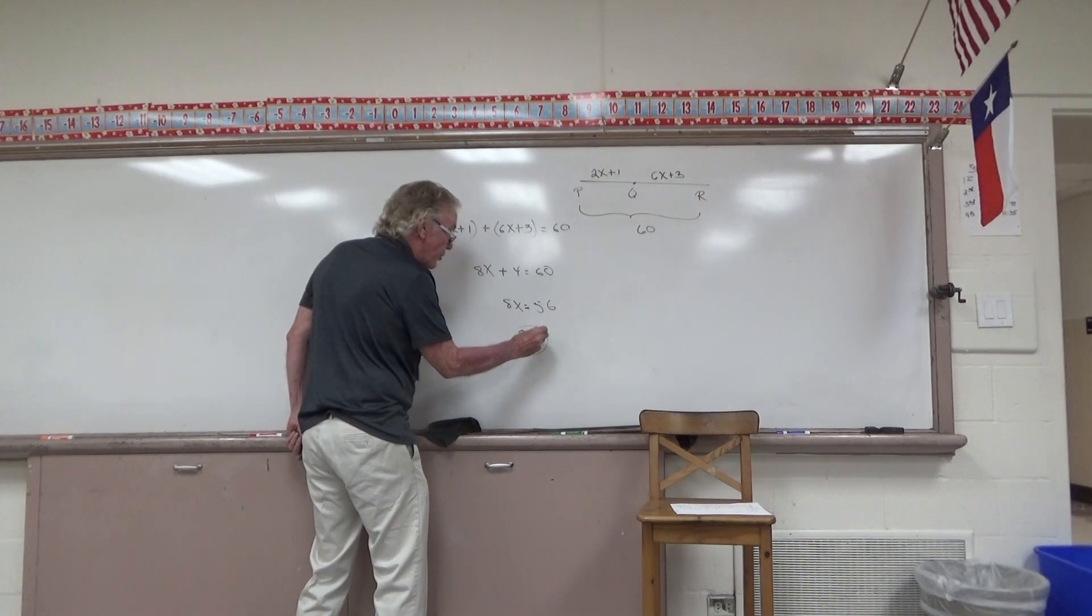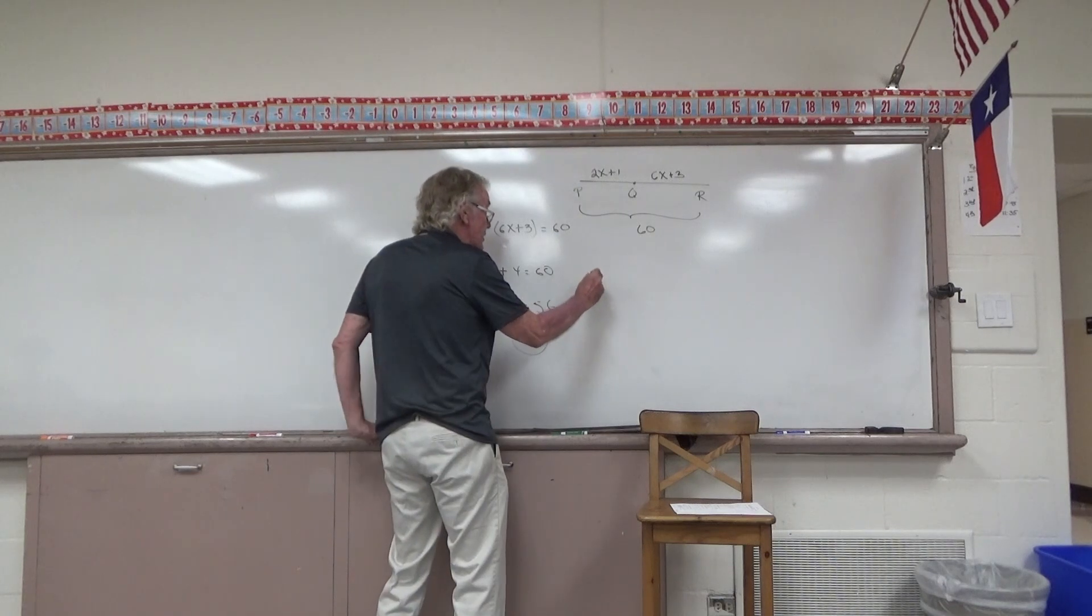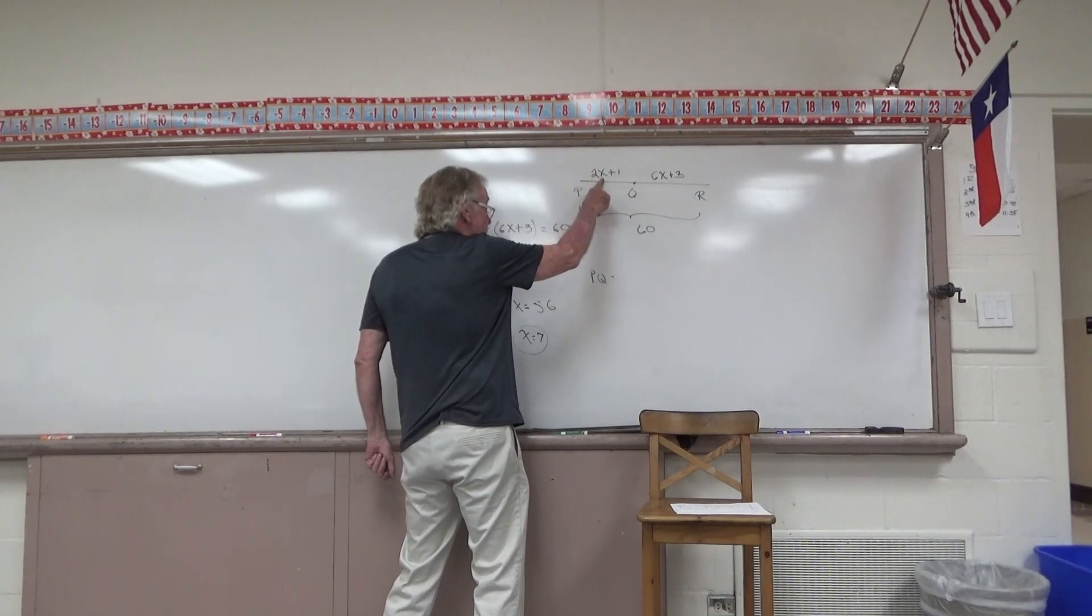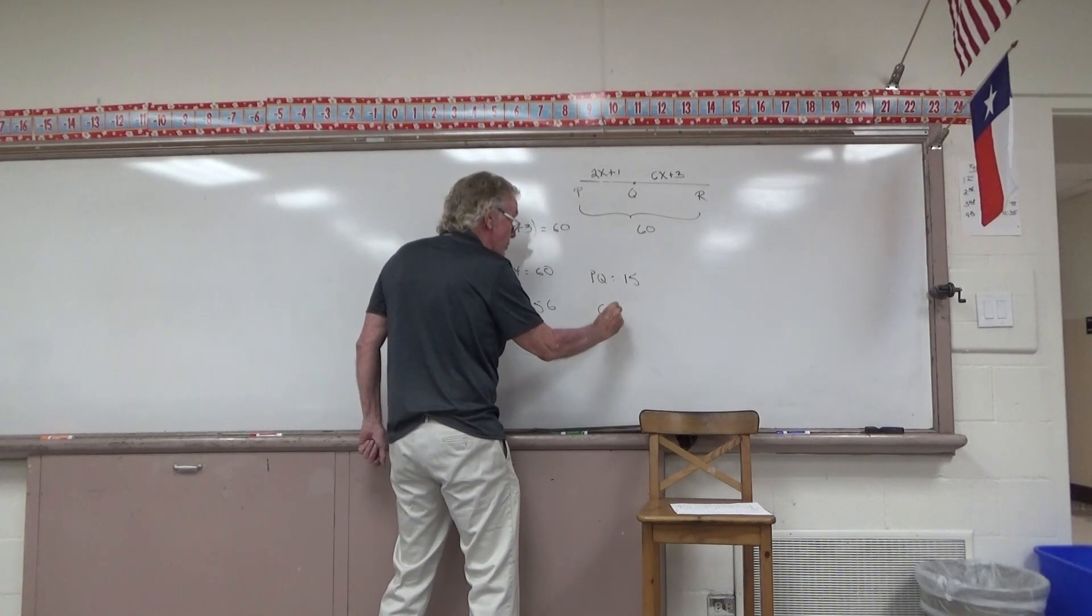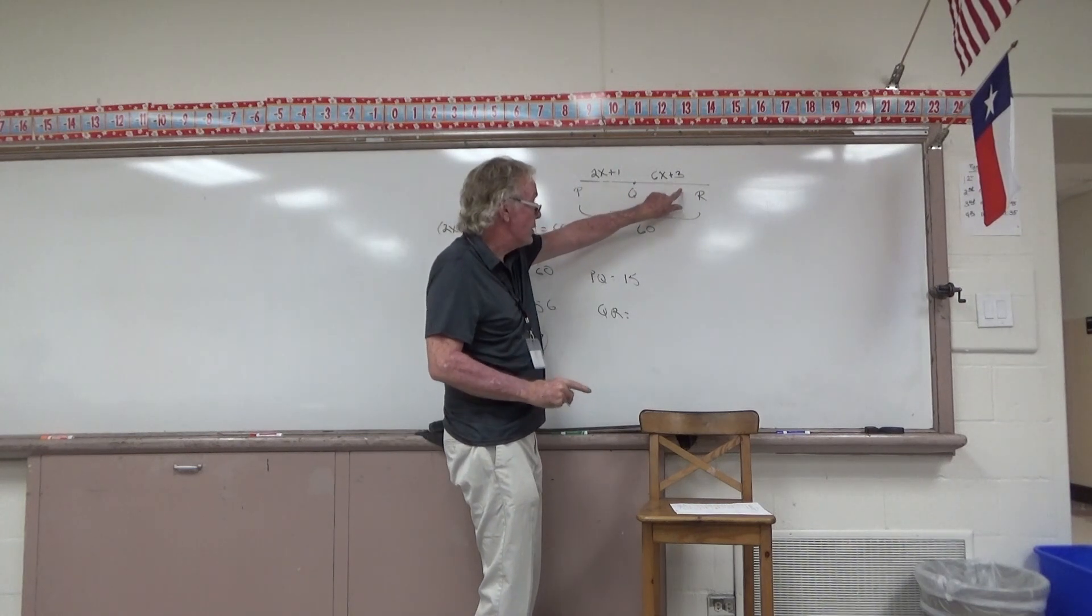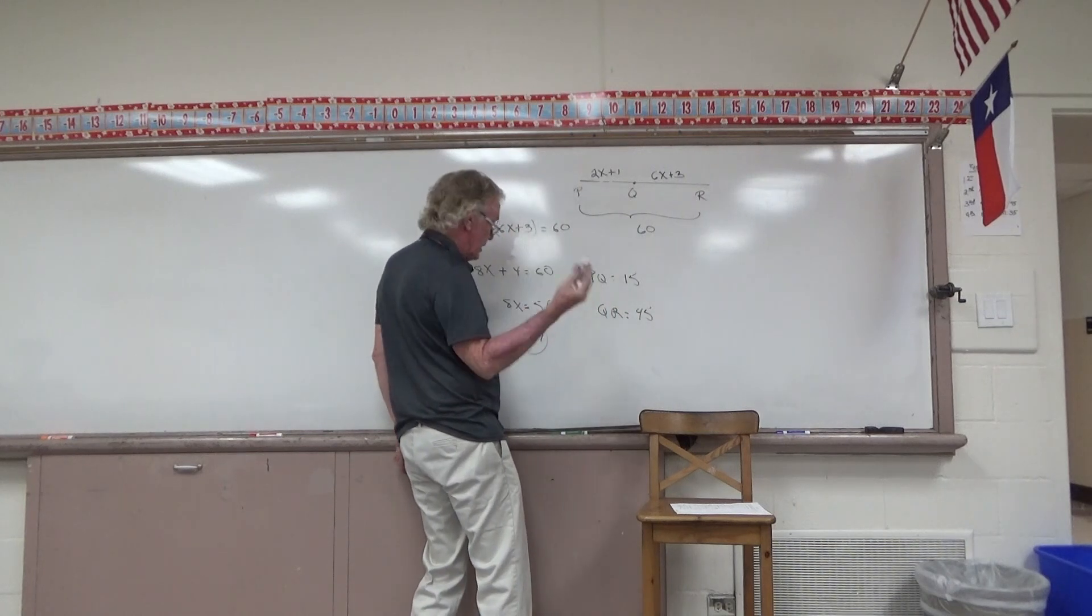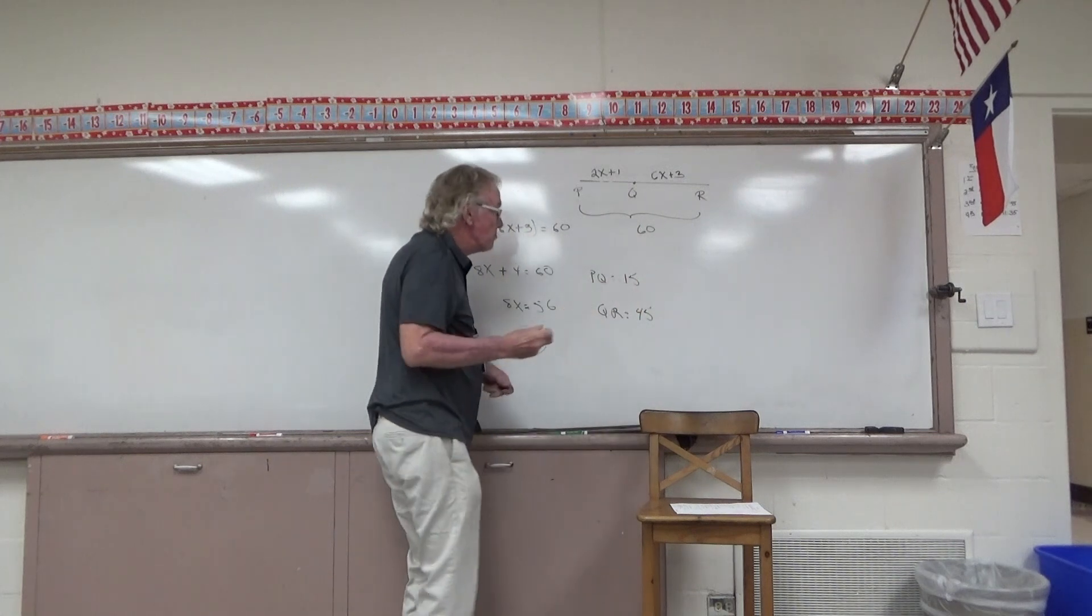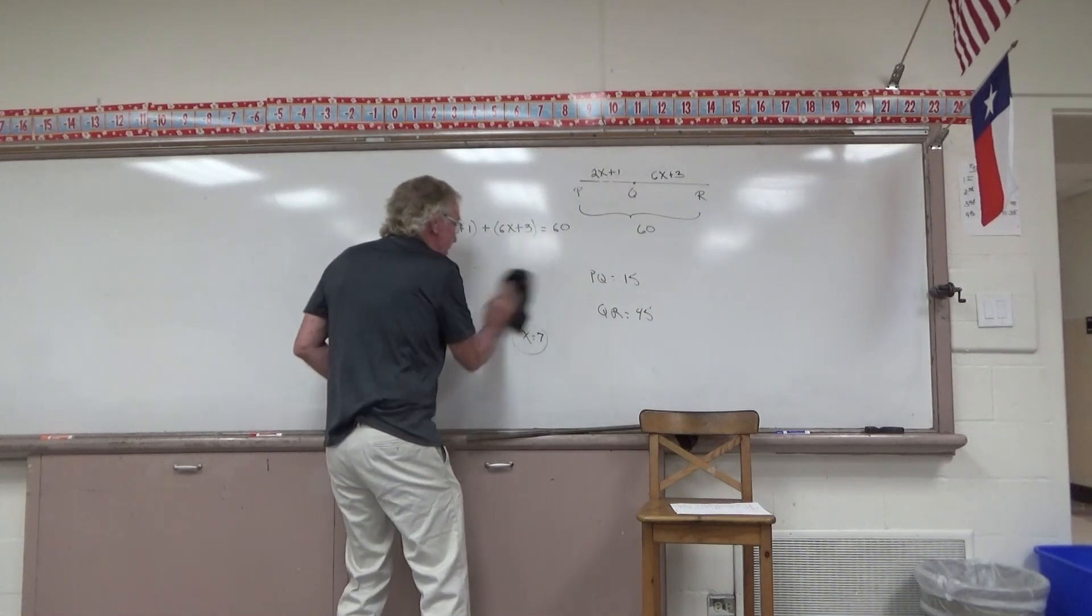Now let's see what that does for us if X is equal to 7 and I'm not quite finished yet. What would be the length of PQ? If X is truly 7, 2 times 7 is 14 plus 1, PQ would be 15. And then QR, if X were 7, 6 times 7 is 42 plus 3 would be 45. And now I'm happy and I think it's completely solved. These two lengths 15 and 45 add to 60, so it's appropriate. Let's do a couple more, please.